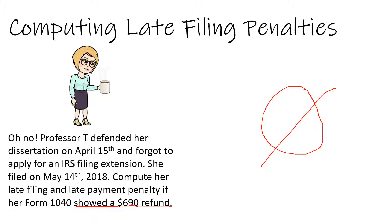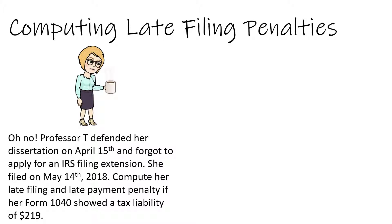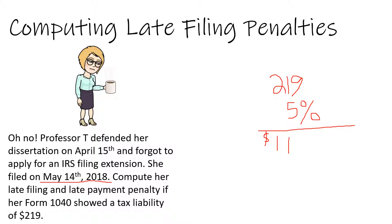However, this is effectively an interest-free loan to the government because the $690 refund is money the government over-withheld from Professor T's paycheck. Now what would happen if her income tax statement showed a tax liability of $219? She filed her income tax return one month late, meaning that she now owes $11 in addition to any interest that may have accrued on the tax liability.